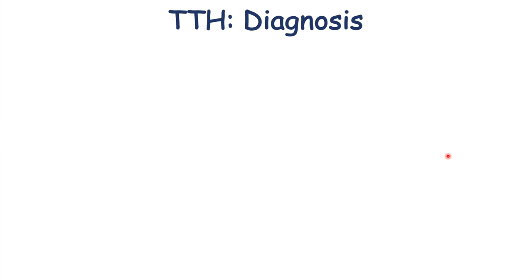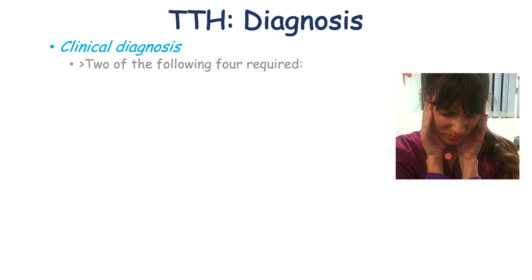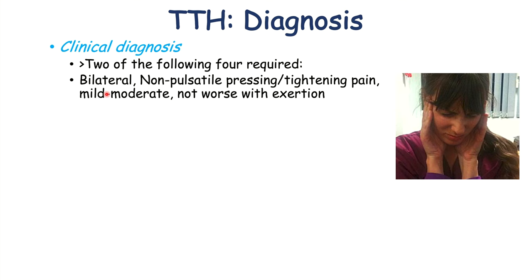How do clinicians diagnose tension type headache? The diagnosis is a clinical one. According to the International Headache Society or IHS, the clinical diagnosis requires at least two of the following four characteristics: the headache must be bilateral, non-pulsatile, pressing or tightening pain, mild to moderate in severity, and not worse with exertion.